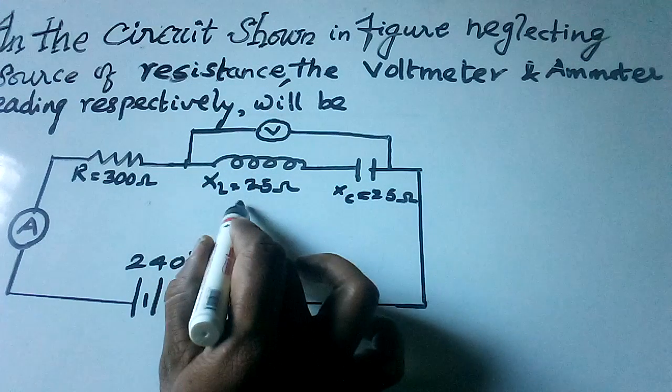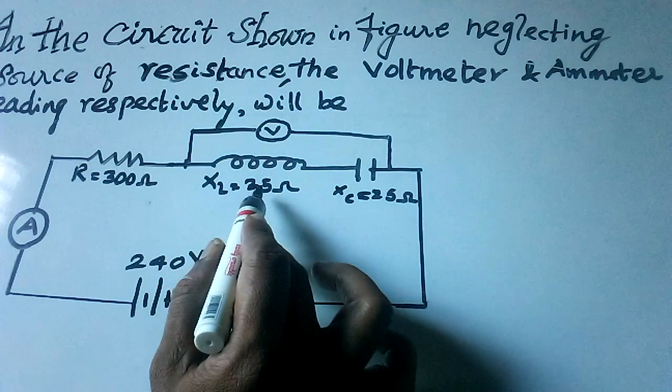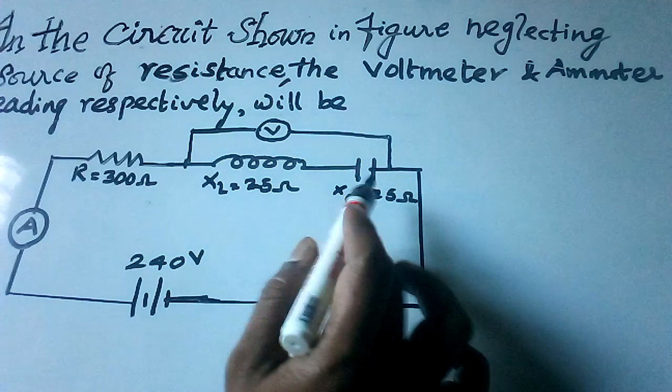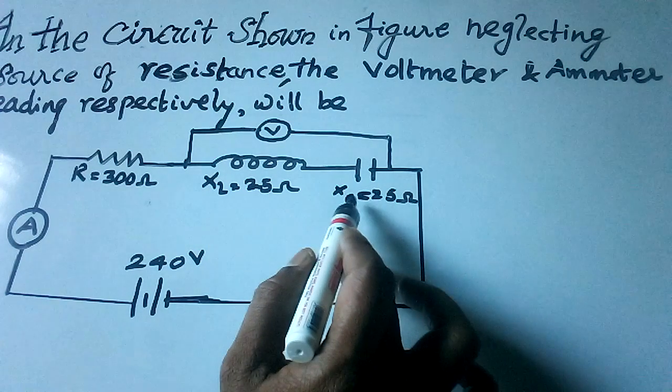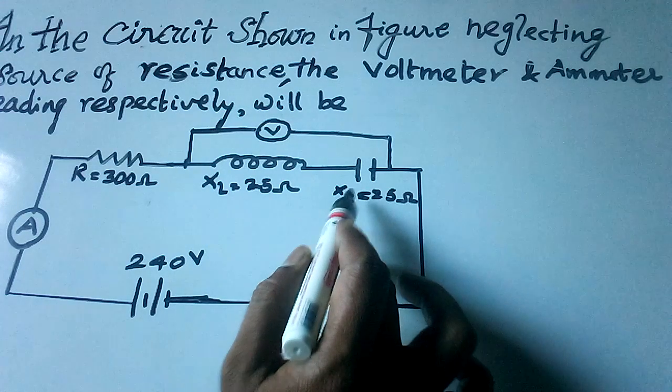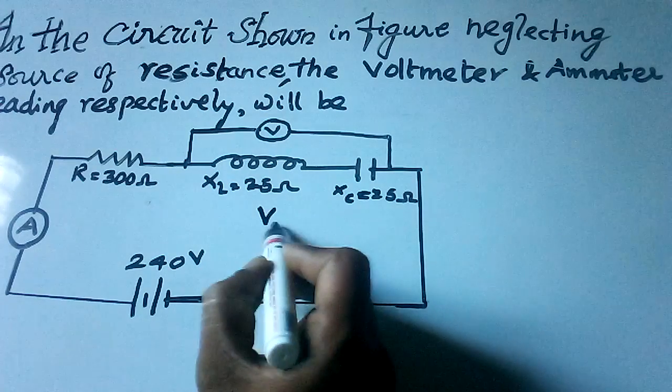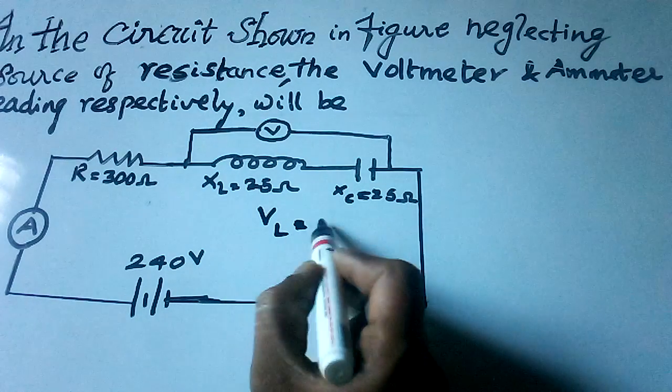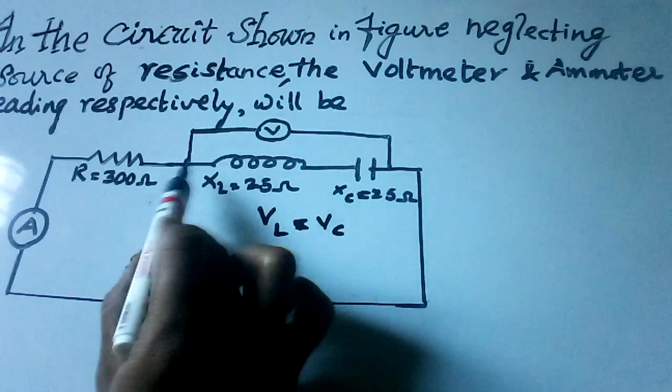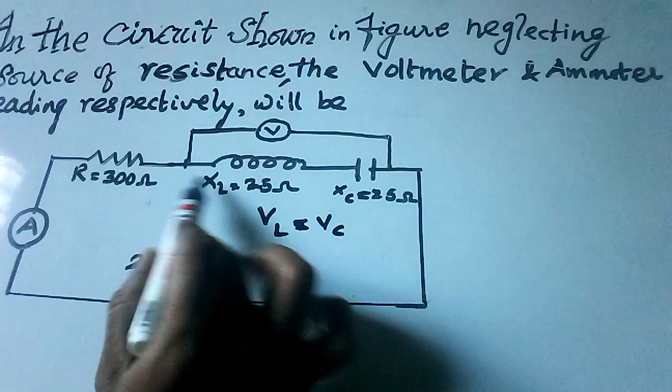inductance VL is equal to I times XL, and the voltage across capacitor is I times XC. Both are equal, VL equals VC, since the current going through both inductor and capacitor is the same because both are connected in series and both have equal